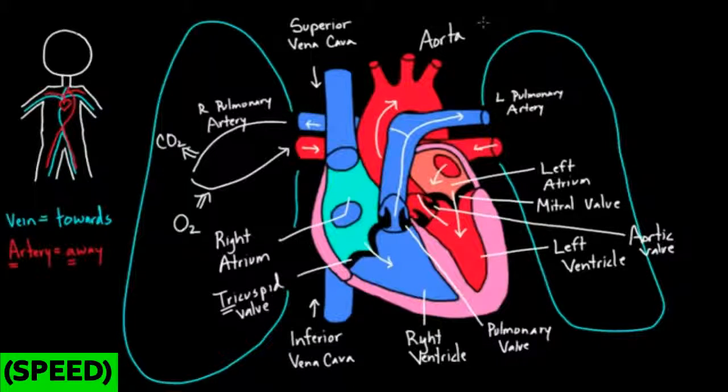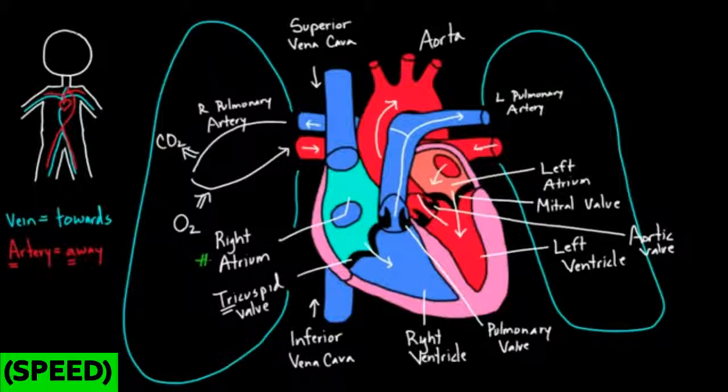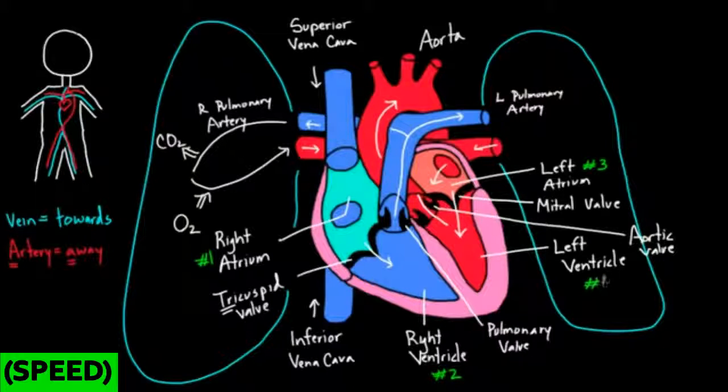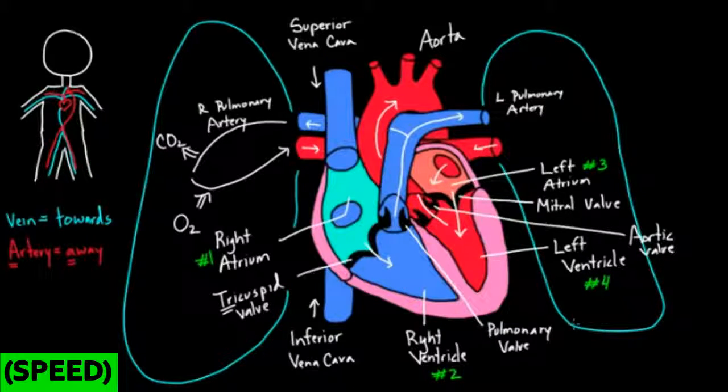You can see how blood now flows from the body into the four chambers. First into the right atrium, this is chamber number one. Then it goes into the right ventricle, this is chamber number two. It goes to the lungs and then back out to the left atrium, this is chamber number three. And then the left ventricle. This happens every moment of every day. Every time you hear your heart beating, this process is going on.